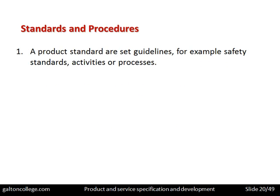Product standards are set guidelines that govern the use of the product — for example, safety standards or activities or processes. What is the standard of use under which the product should be operated? What are the guidelines for its use? Should it be used in very damp environments or in situations with limited ventilation? These guidelines should be clearly stated.